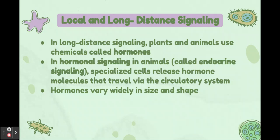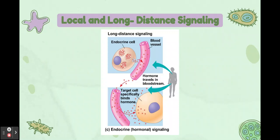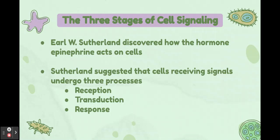In long-distance signaling, plants and animals use chemicals called hormones. In hormonal signaling in animals, also known as endocrine signaling, specialized cells release hormones that travel via the circulatory system. Endocrine cells secrete hormones into body fluids, usually the blood. Hormones reach virtually all body cells but are only bound by some cells — those target cells that specifically bind the hormone.